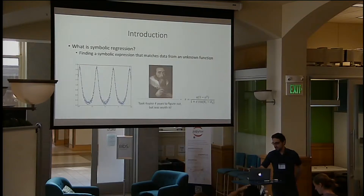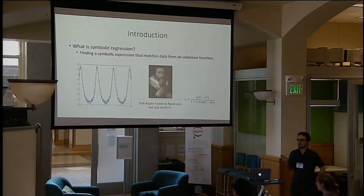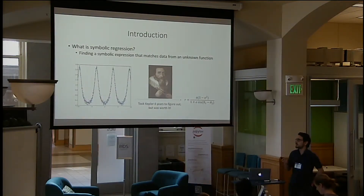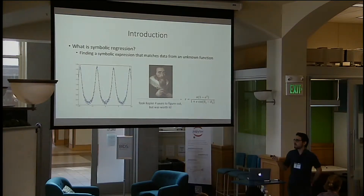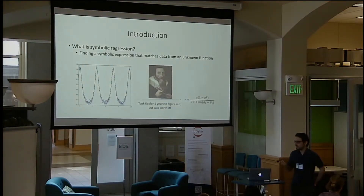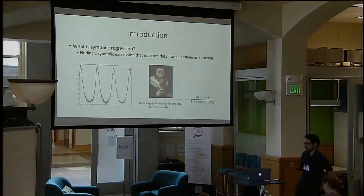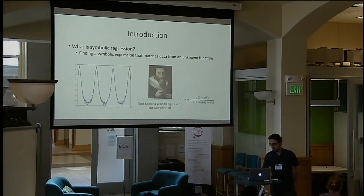For example, it's what allowed Kepler to discover the fact that planets move in elliptical orbits around the Sun. However, this took Kepler four years to discover, so the goal is to try to accelerate this process and make it automatic.